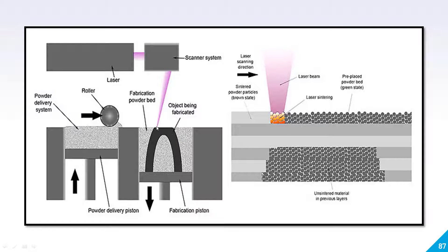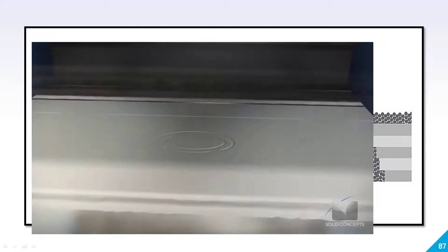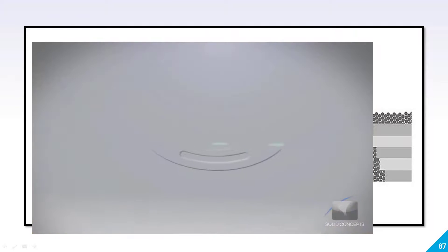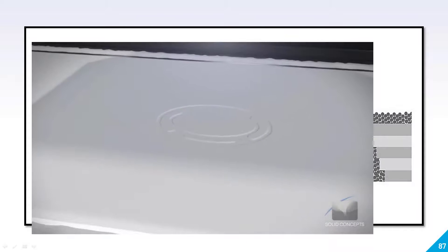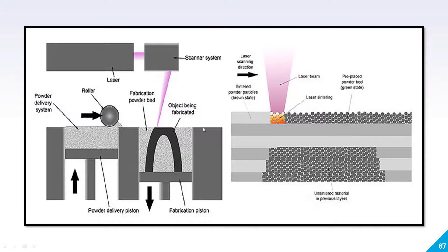Here the raw material in the form of powder is present. Once this laser strikes the powder, the powder will deform and create a layer. Once one layer has been created, this piston will go downward and the delivery system piston will go upward one layer. When it goes up one layer, this roller will roll and spread the powder onto the fabrication piston, and again this cycle will be repeated and your object will be created.